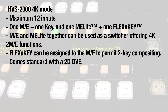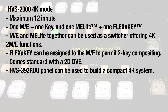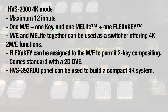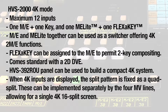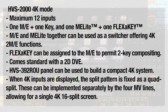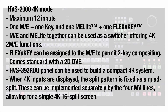The DVE can be used as picture-in-picture when 2K size resources are used. The rack-mounted HVS392ROU panel can serve as the main control panel, building a compact 4K system with the 4U main unit. The four multiviewer lines remain HD outputs, but when 4K inputs are displayed, the split pattern is fixed as a quad split. These outputs can be implemented separately across four multiviewer lines, allowing a single 4K 16-split screen by inputting four lines to a 4K monitor as QFHD outputs.